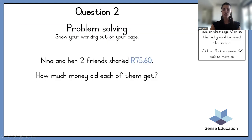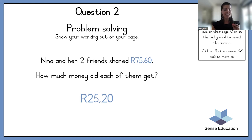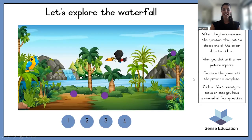Nina and her two friends shared 75 rand 60 cents. How much money did each of them get? This is a sharing problem. Write down your answer. The answer is 25 rand 20 cents. If you listen carefully to the problem — it says Nina and her two friends — which means you're sharing between three people, not two. Don't get confused with that one. Let's have a look — another bird by the tree.